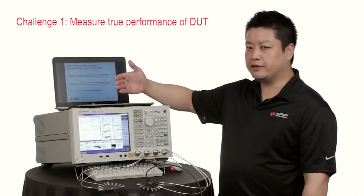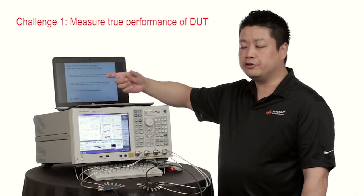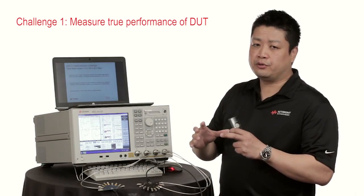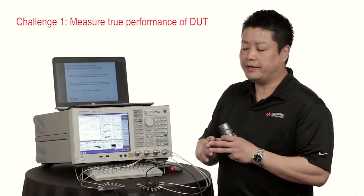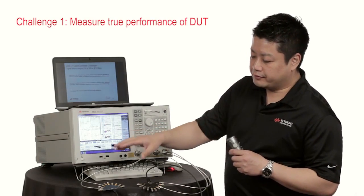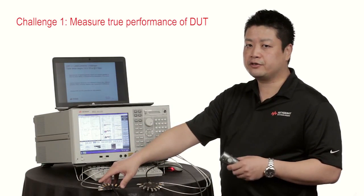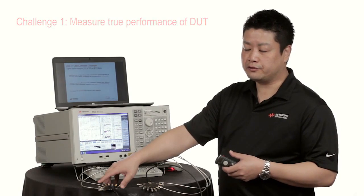Due to the higher data rates at 10 gigabit, one unit interval is 100 picoseconds, and that leads to tighter device margins and therefore there's an increasing need to remove the effects of the test fixtures for measurements to get correct results.